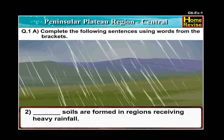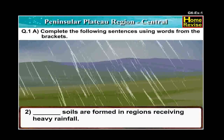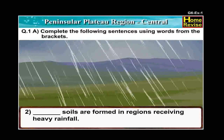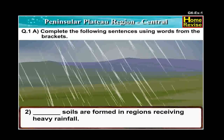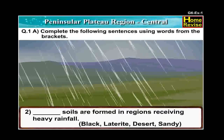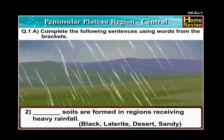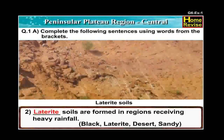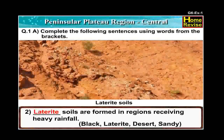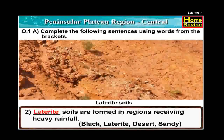Number 2: Dash soils are formed in regions receiving heavy rainfall. The options are Black, Laterite, Desert and Sandy. The answer is: Laterite soils are formed in the regions receiving heavy rainfall.